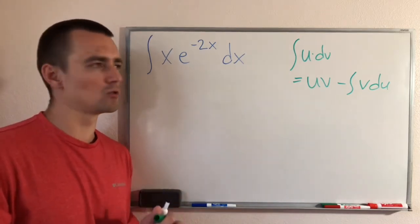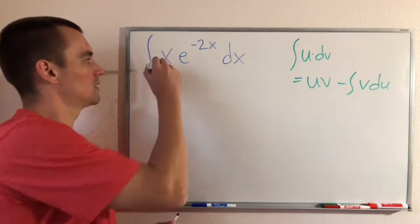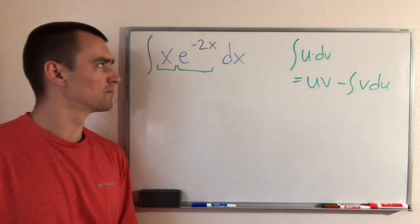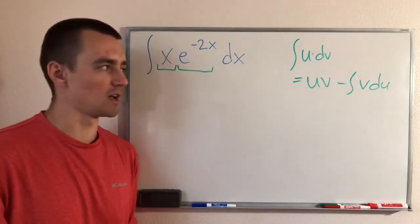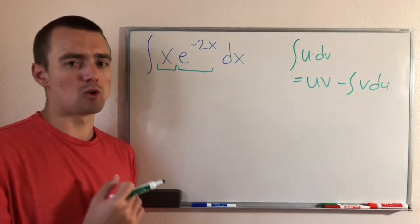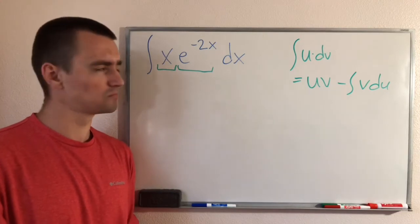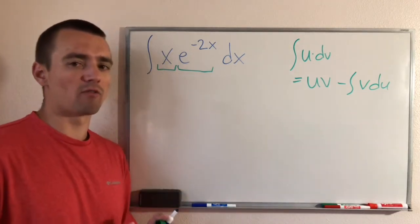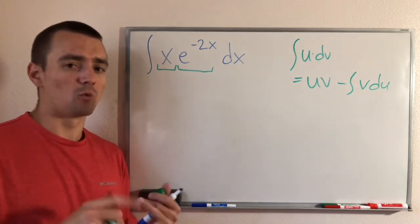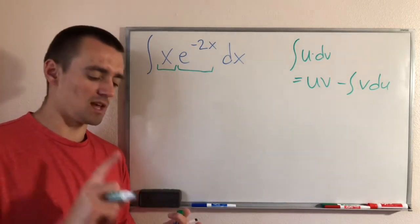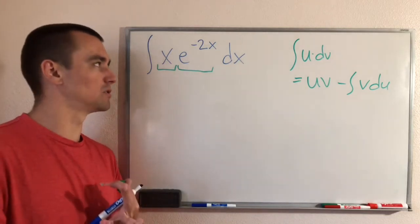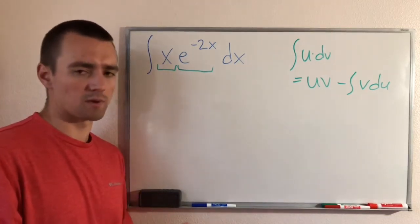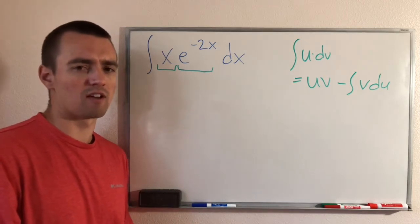Let's think about our two options here. Obviously x is going to be one of our pieces and e to the negative 2x is our other piece — these are the only two things being multiplied together, so one of them is going to be u and one is going to be dv. If we think about the derivative and the antiderivative of x: the derivative of x is just going to be 1, just a constant.